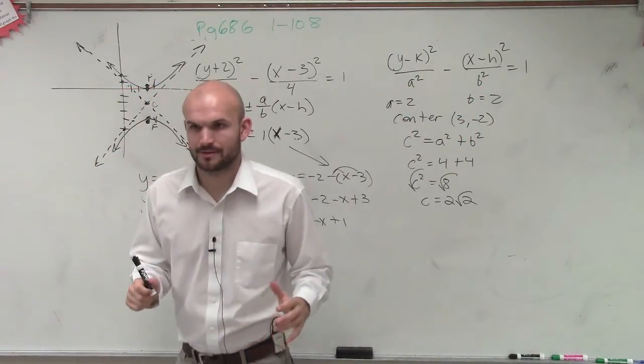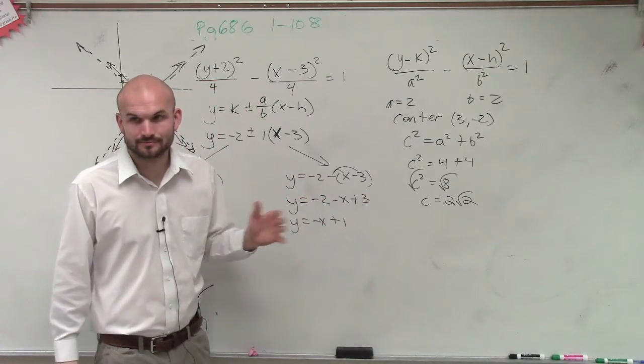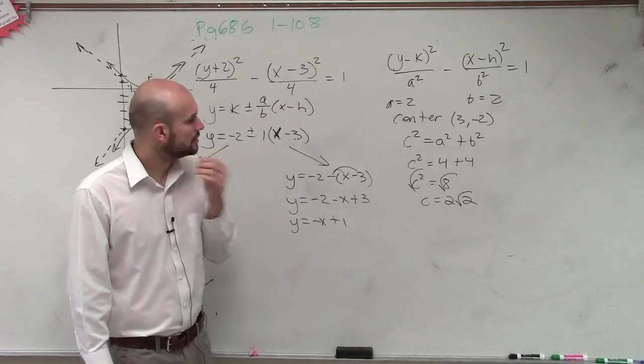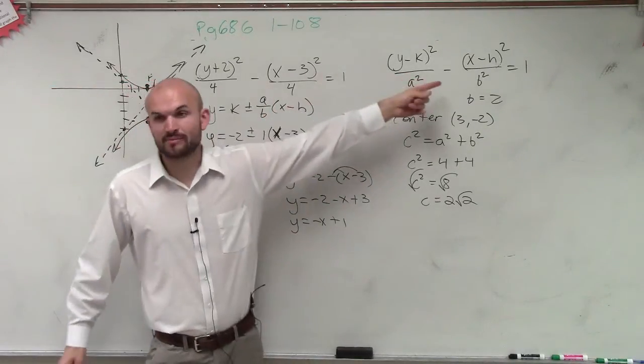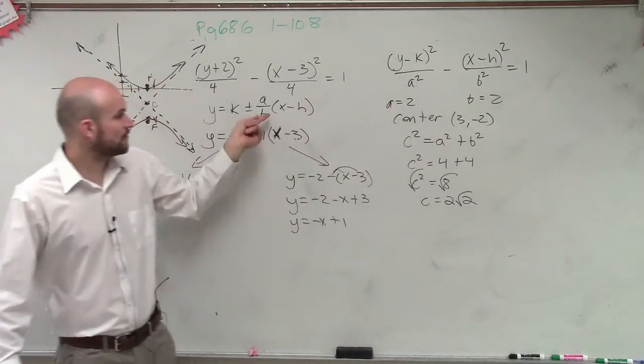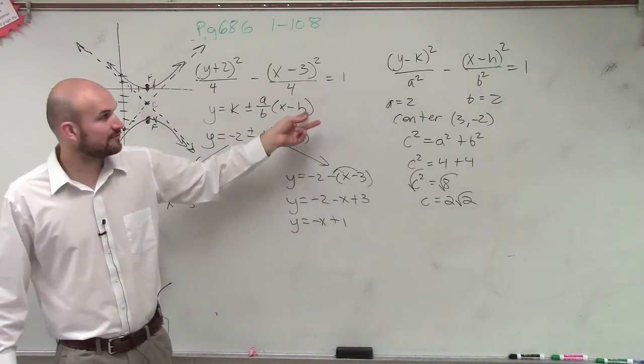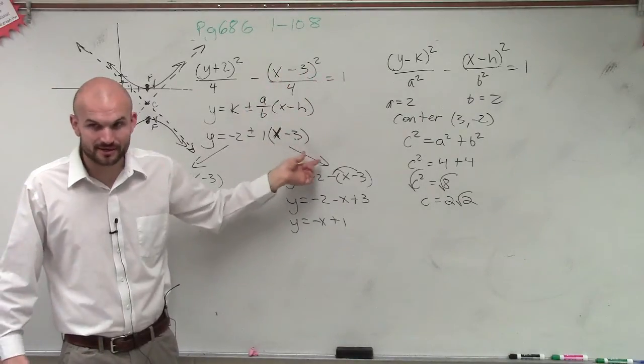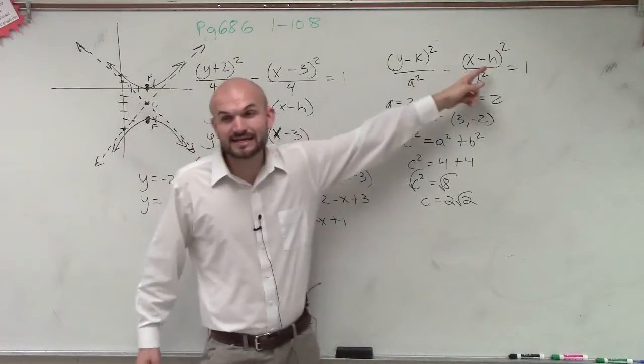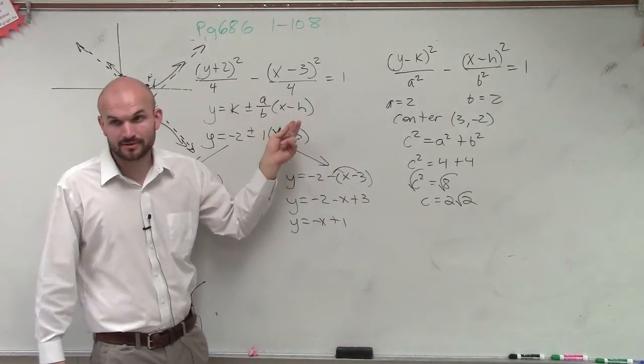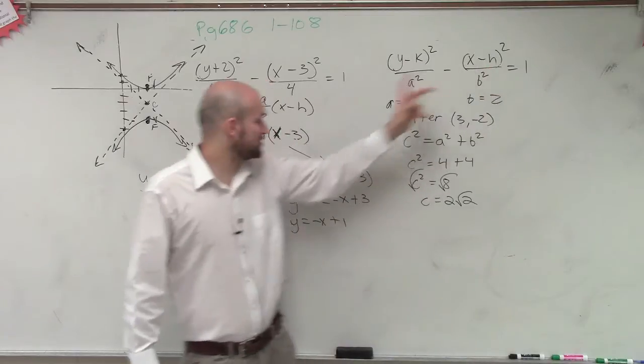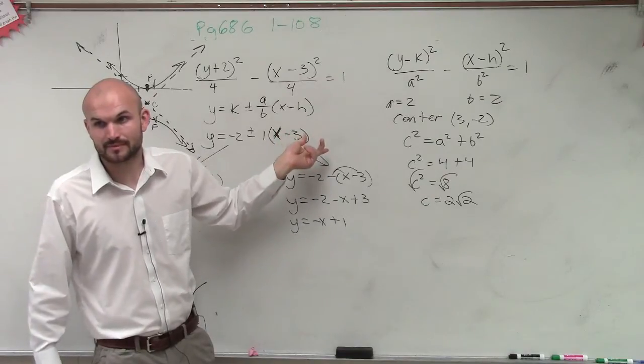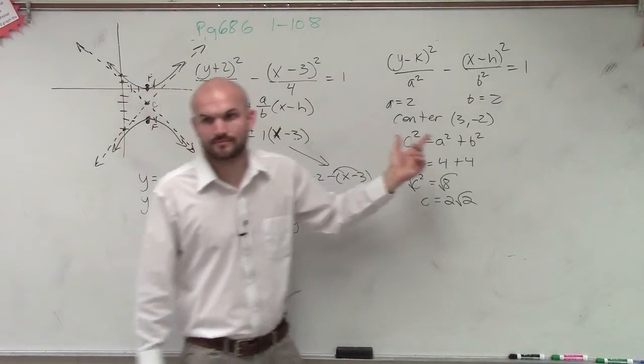So when you got that it was x minus 3, how did you get that? The formula, look at it. Here's the formula, x minus h. Look at this formula, x minus h. What's in the graph? x minus h, so it's x minus 3. So therefore, it's going to still be x minus 3. Whatever it is in this is the same for the asymptote. So if this says x minus h, this is x minus h. This is x minus 3, so that's x minus 3. It's the same thing.